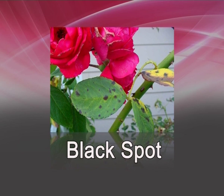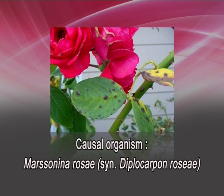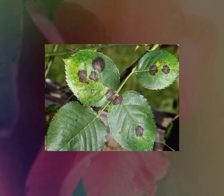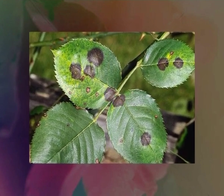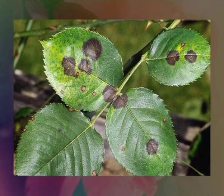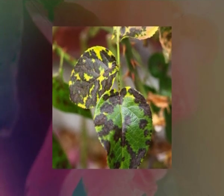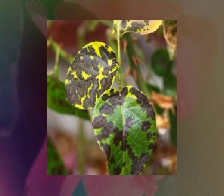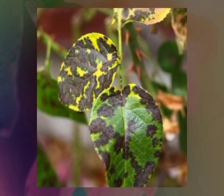Next, the black spot disease of rose. The causal organism is Marssonina rosae. Symptoms: the characteristic symptom of the disease is the appearance of leaf spots which are black, circular or irregular, with black margins and yellow halos.